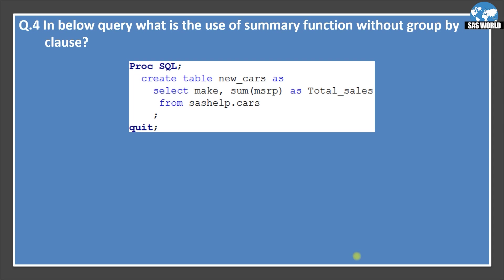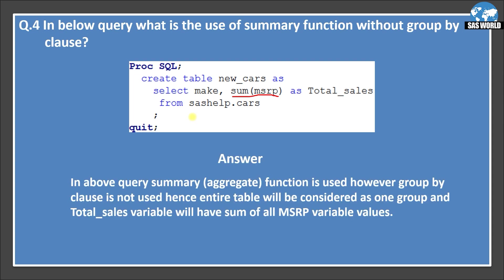In the below query, what is the use of a summary function without a GROUP BY clause? This is the opposite of the previous question — here we have a summary function but no GROUP BY clause. The answer is: when a summary aggregate function is used without GROUP BY, the entire table is treated as one group, and the total_sales variable will hold the sum of all MSRP values across all rows, without creating any groupings.